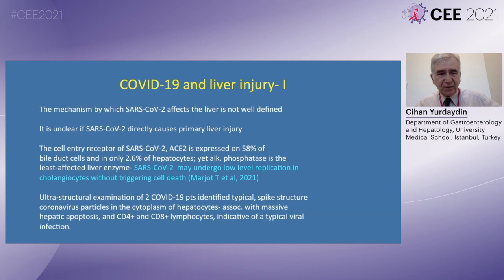The cell entry receptor of SARS-CoV-2, ACE2, is expressed on 58% of bile duct cells, but in only 2.6% of hepatocytes. This appears to be somewhat controversial because alkaline phosphatase is the least affected liver enzyme.